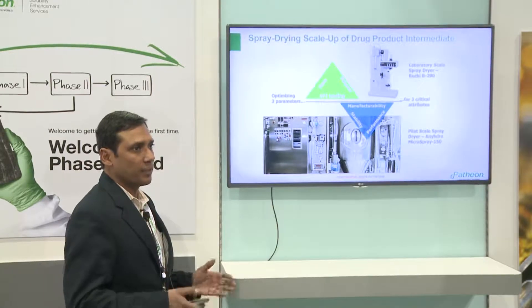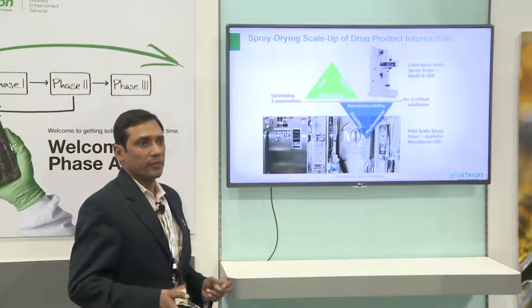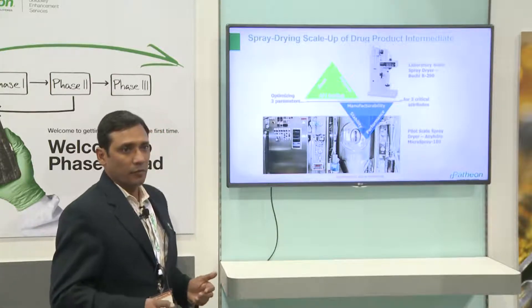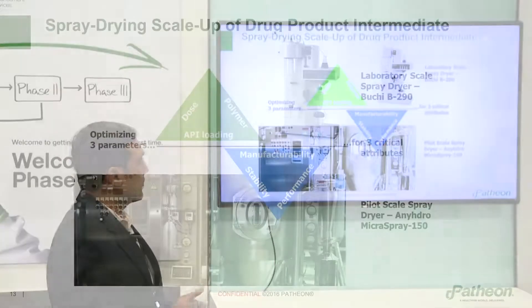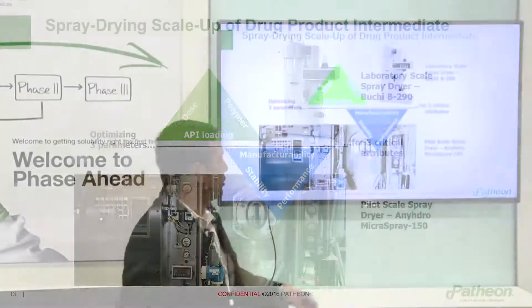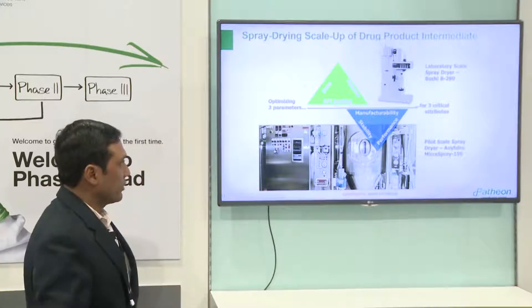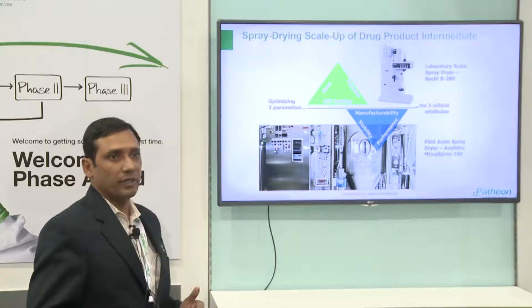Regarding scale-up of the spray dried intermediate: John showed data with a small scale Ibuki spray drying process, typically a few hundreds of milligrams to tens of grams. For Phase 2 we need tens of kilograms, so we need to scale up. Scaling up to the pilot scale Anhydro MS150 involves balancing manufacturability, performance, and stability — all three must be balanced while achieving equivalent performance for both the spray dried intermediate and the tablet.